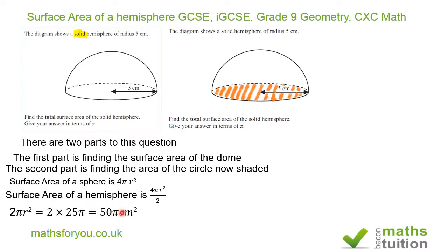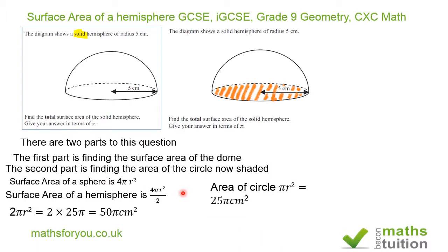This is the surface area of the hemisphere itself. Now for the circle — the area of a circle is πr². With r equal to 5, πr² gives us 25π centimetres squared.